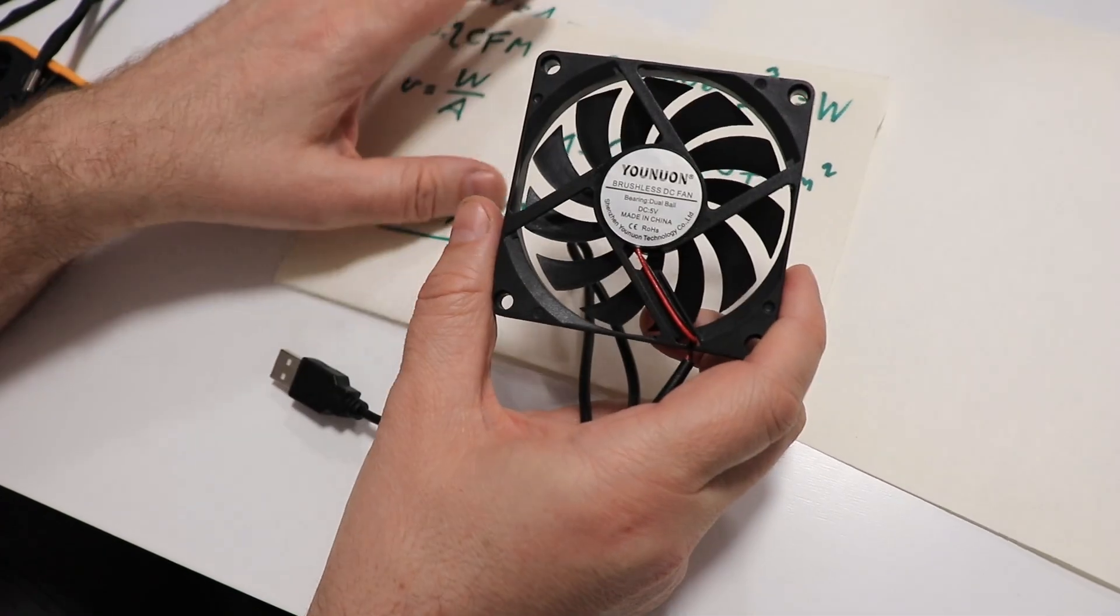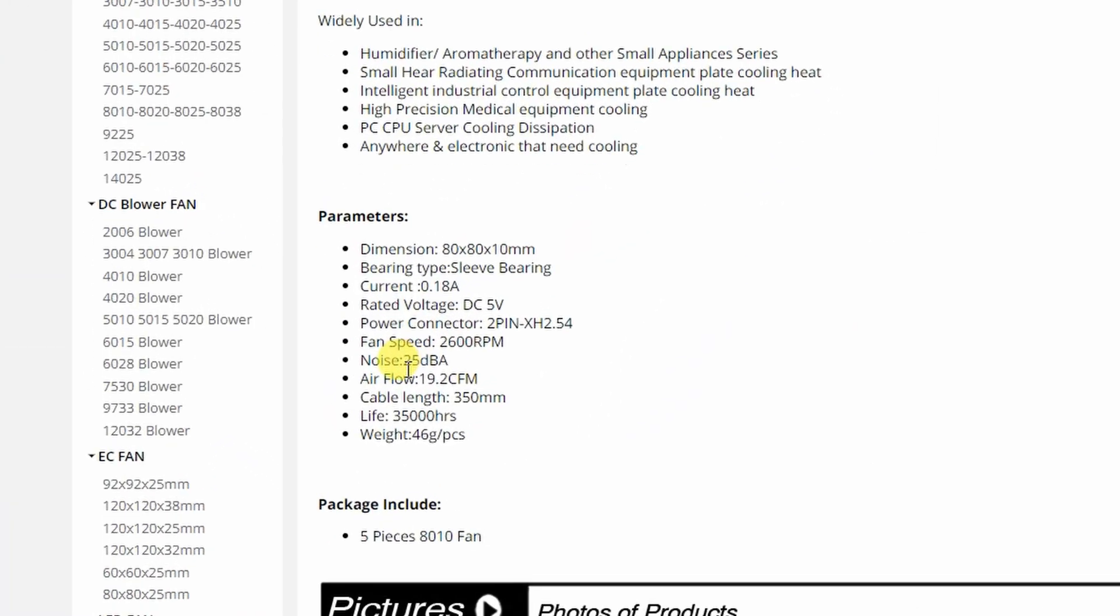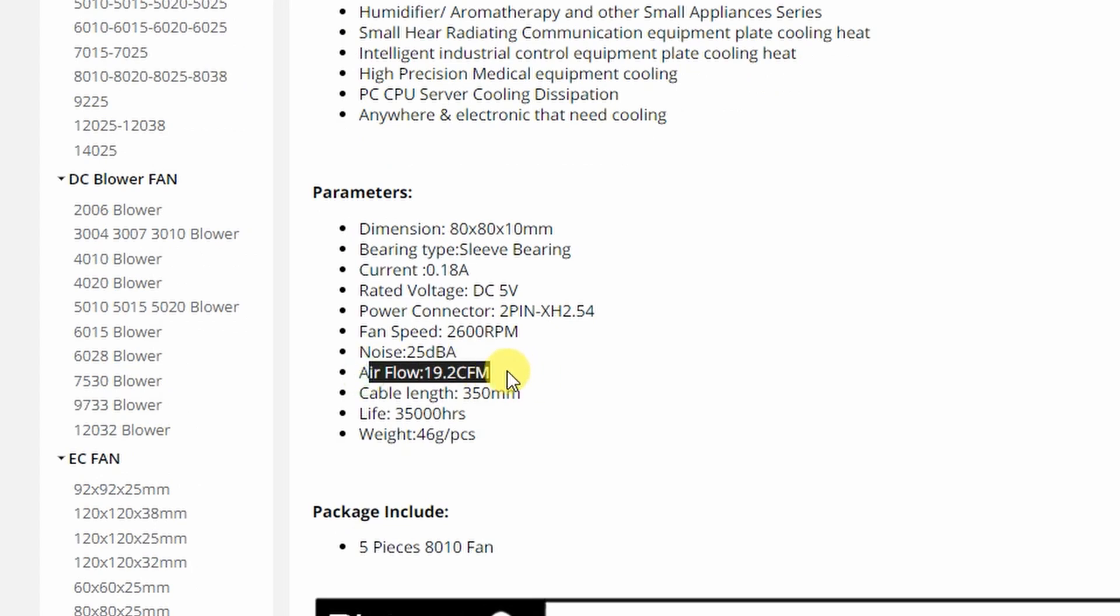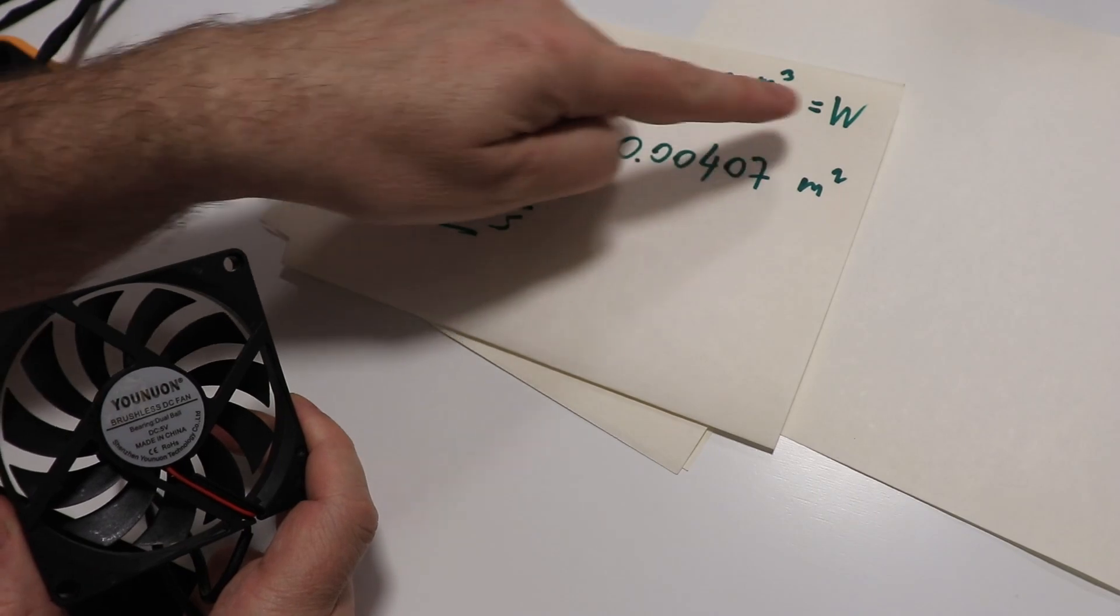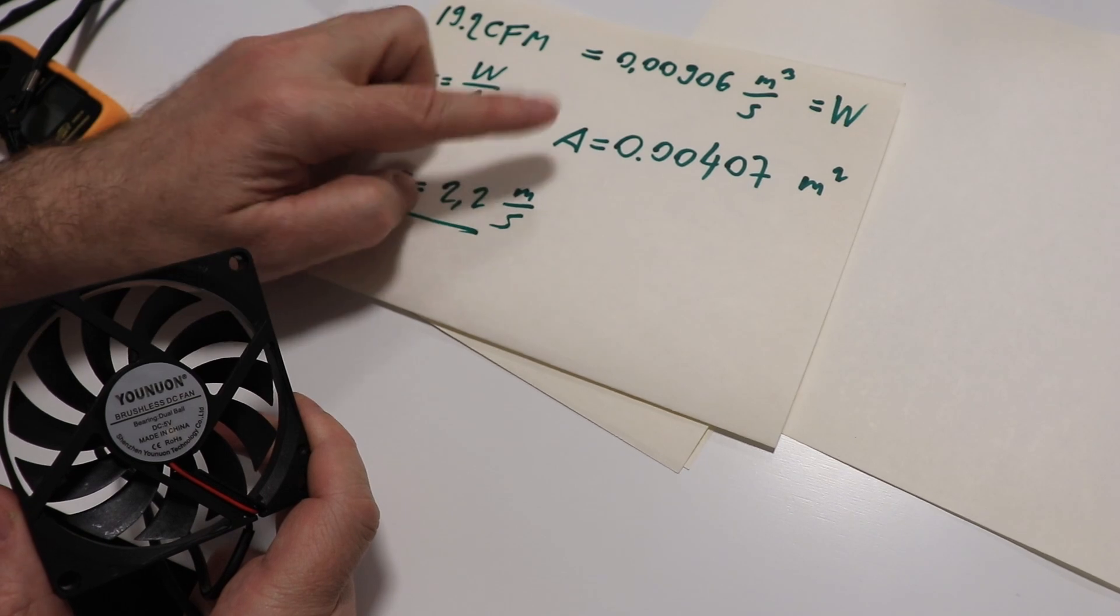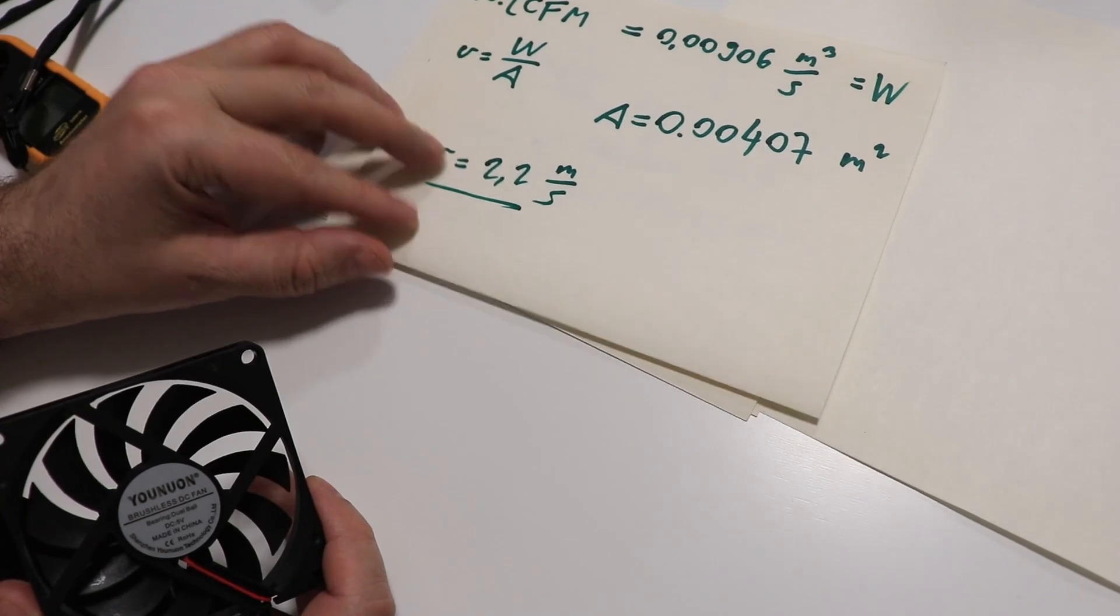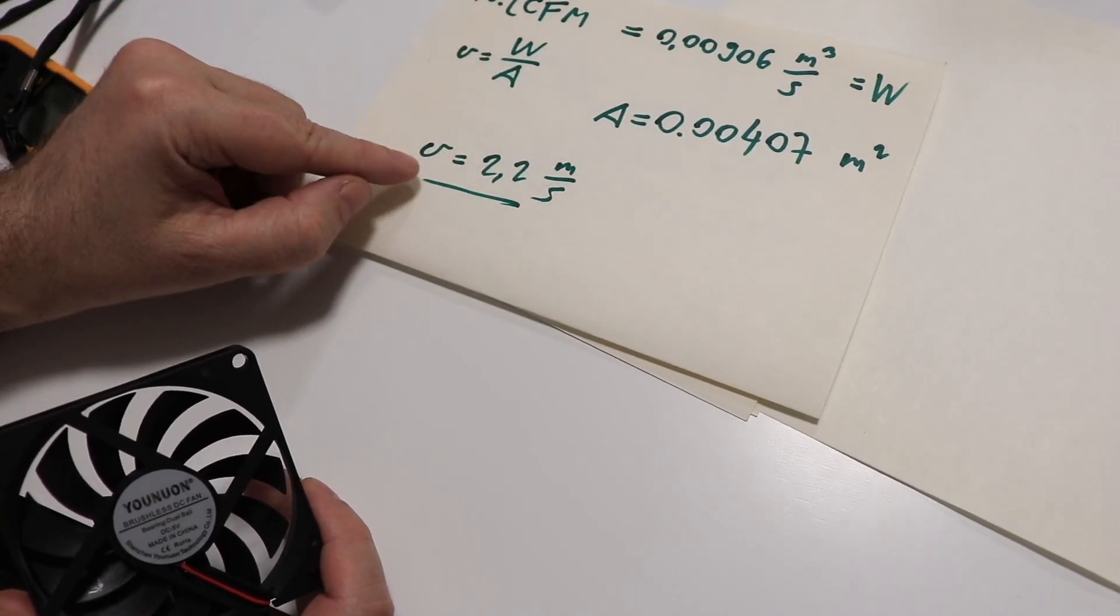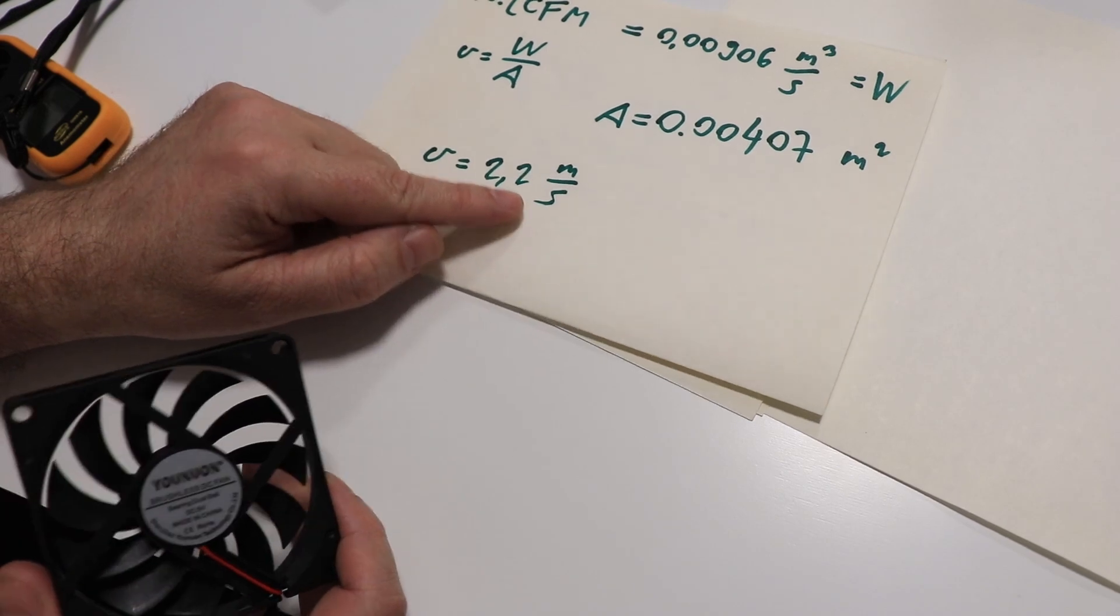I found some data about this fan. On internet I found that the flow rate is 19.2 CFM cubic foot per minutes. And I can convert it and it is 0.009 approximately cubic meter per seconds. So this is the cubic flow rate, and I have to divide this with the area. The area I already calculated in the previous calculation. And this means if I divide these two numbers I should get approximately 2.2 meters per second velocity. Let's measure them.